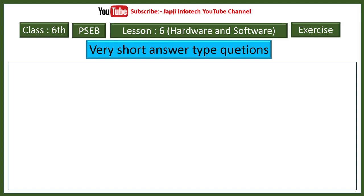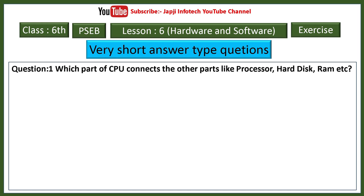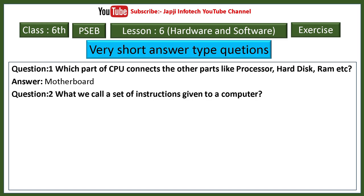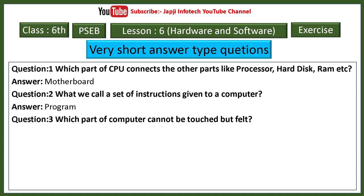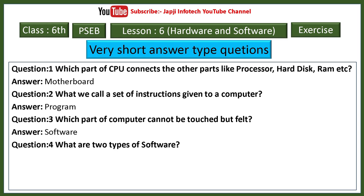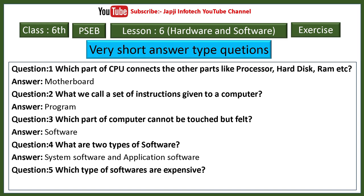Very short answer questions in lesson six. The motherboard connects other parts like processor, hard disk, RAM, etc. A set of instructions given to a computer is called a program. The software part of computer cannot be touched but can be felt. There are two types of software: system software and application software. System software are the expensive type.